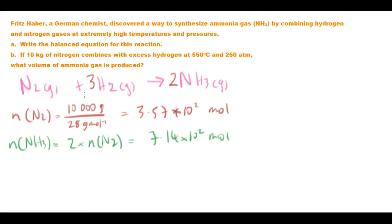Awesome. Now once we have that, we can actually figure out the volume of our ammonia, obviously at STP, using Avogadro's law. So now we have 7.14 by 10 squared times 22.71, which is the volume per mole of that gas. So it ends up being about 1.62 by 10 to the 4 litres of ammonia, and this is at STP.